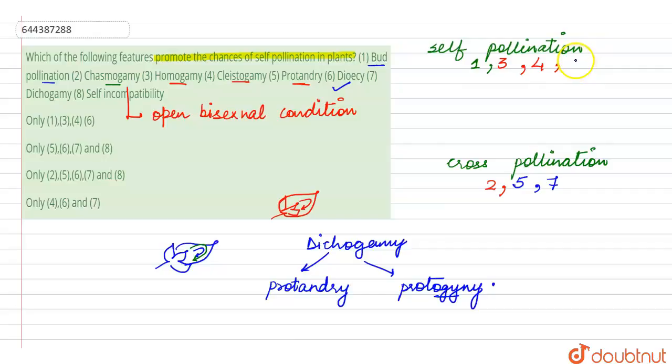So this is number six. And self-incompatibility means that the pollen grain of the same plant or the same flower will not germinate on the stigma which is genetically same. So here cross-pollination will be favored, so this comes under the cross-pollination.